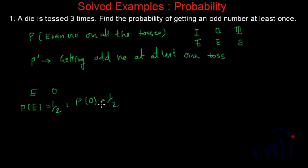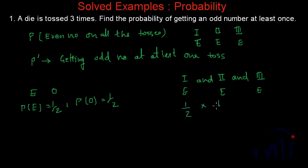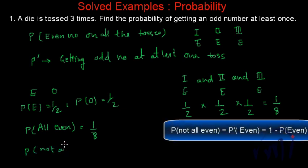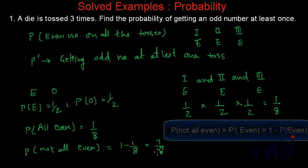Three out of six numbers are even and three out of six numbers on a die are odd. So the probability of getting an even number on the first toss and on the second toss and on the third toss will be one-half multiplied by one-half multiplied by one-half, which equals one-eighth. So the probability of all even is one-eighth, and the probability of not all even is one minus one-eighth, that is seven-eighths. So seven out of eight times you will get at least one odd number when tossing a die three times.